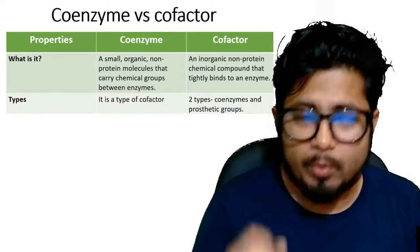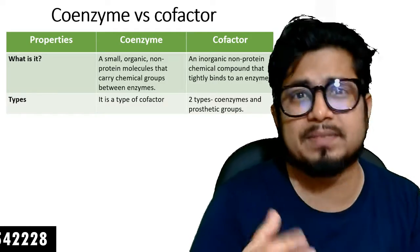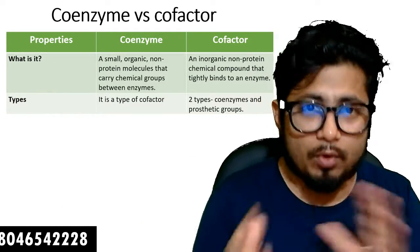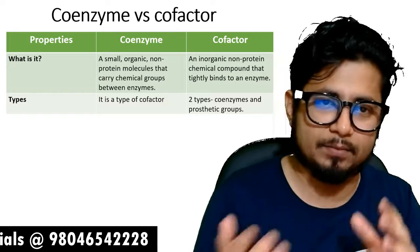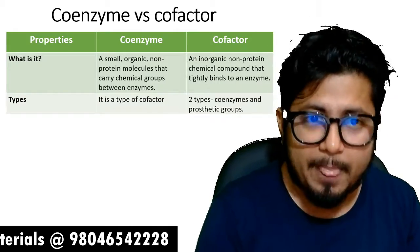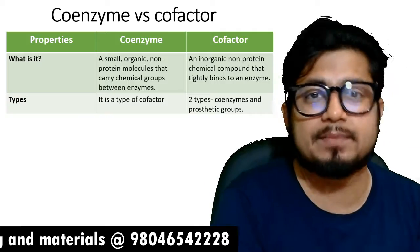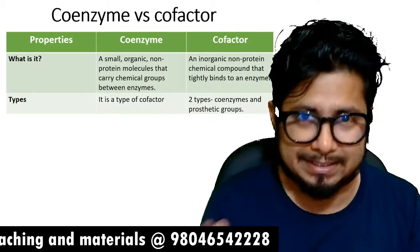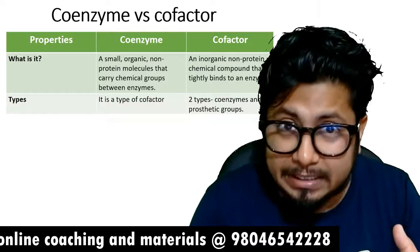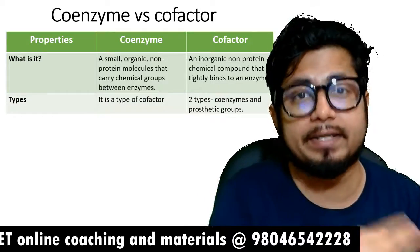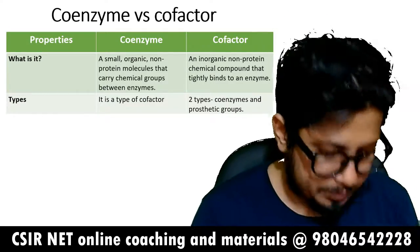The second important parameter is the type. Coenzymes are a type of cofactor. There are only two types of cofactors: one is a coenzyme, and the other is the prosthetic group. So all coenzymes are cofactors, but not all cofactors are coenzymes. The cofactor is divided into two different types: coenzymes and prosthetic groups.